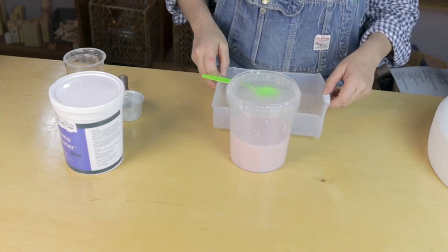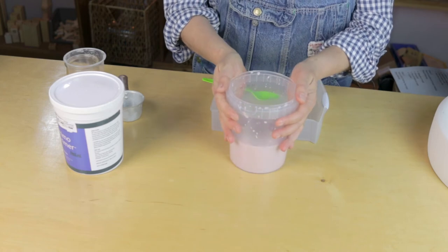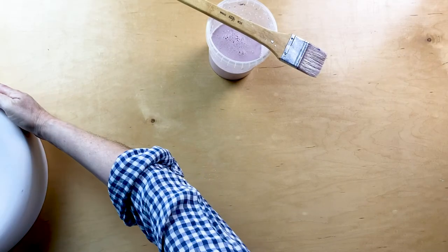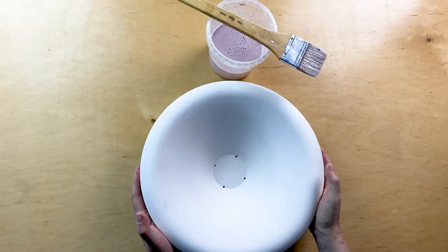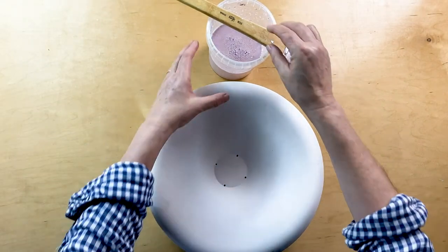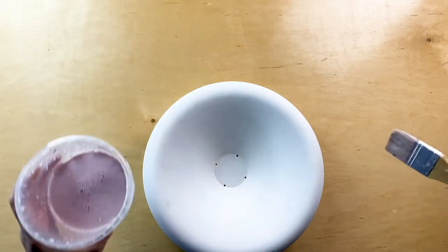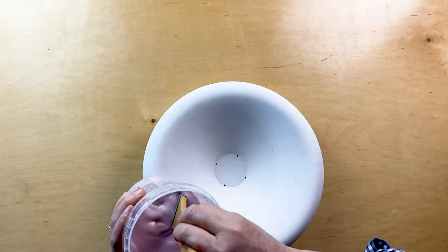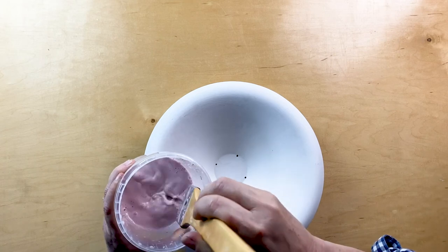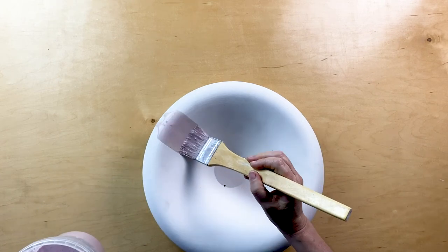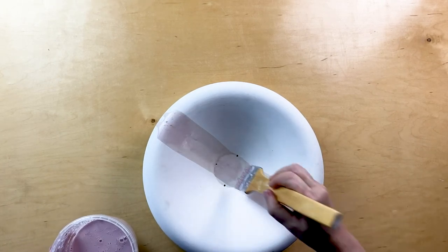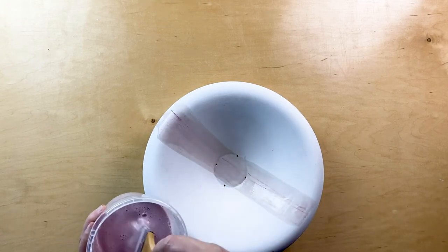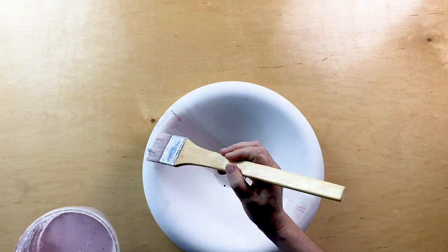Now we will paint the primer onto our mold. Having mixed the primer, we will apply the first coat evenly in one direction.